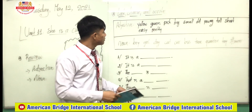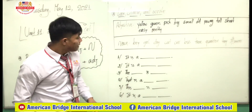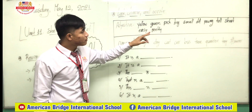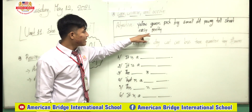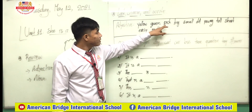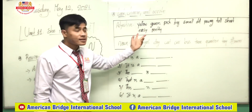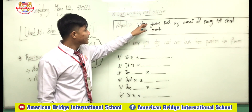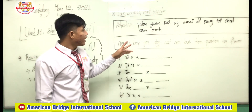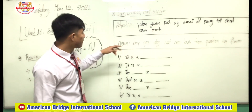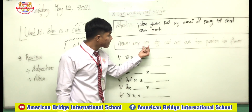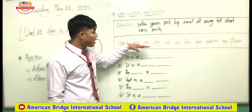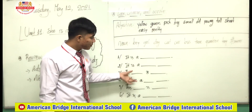Now let's go to the exercise. Look at these adjectives: yellow, green, pink, big, small, old, young, tall, short, easy, pretty. Yellow, green, pink — these are colors, and all colors are adjectives. Big and small are size adjectives. And the nouns are: boy, girl, dog, cat, car, bus, tree, question, flower.